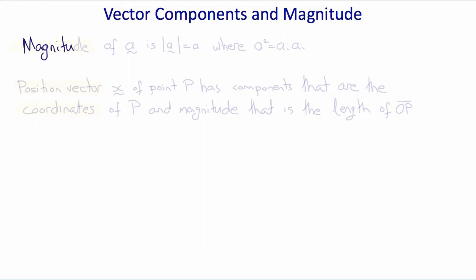The magnitude of a vector a is defined by a squared equals ai ai. This is Pythagoras. So a squared equals a1 squared plus a2 squared plus a3 squared.